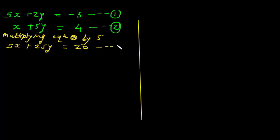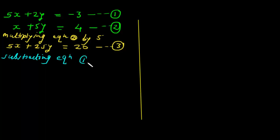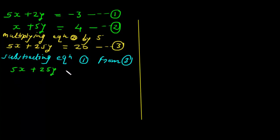Let's give this the number equation 3. Now subtracting equation 1 from equation 3: equation 3 is 5x plus 25y equals 20, and equation 1 is 5x plus 2y equals minus 3.